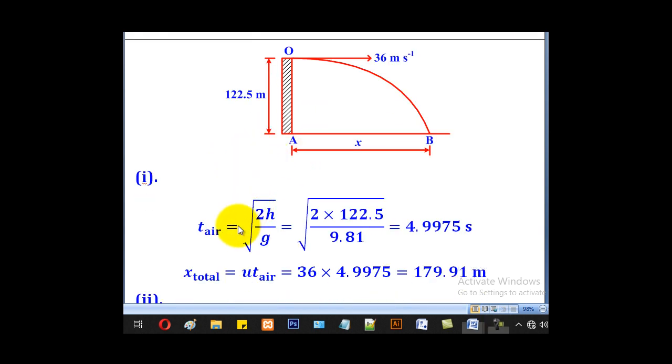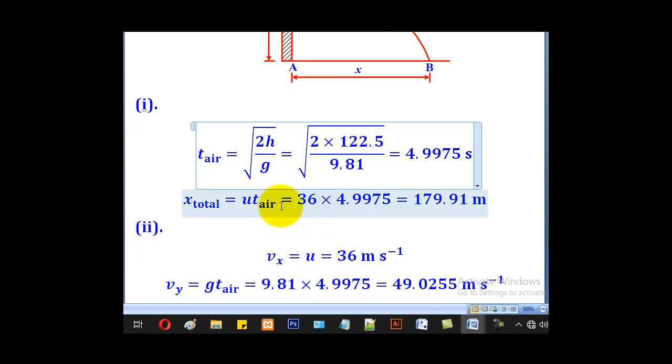This will be the height where the particle is and this will be the initial velocity of projection. Time spent in air is given by the formula square root of 2h over g. Substitute h is 122.5 and g is 9.81. This gives us that our time is 4.9975 seconds. The horizontal distance is given by u times time spent in air. So u is 36 and time is 4.9975, which gives 179.91 meters.